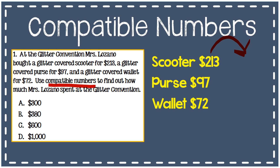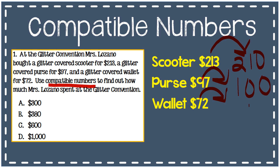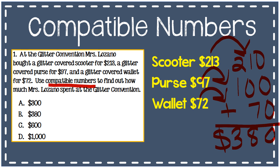213 rounds to 210. 97 rounds to 100. And 72 rounds to 70. I rounded each of them to the same place — the nearest ten. Now I'm going to add these up and I see that $380 was spent at this convention. My answer is B.